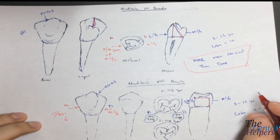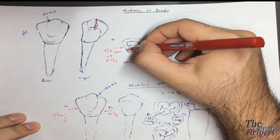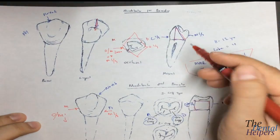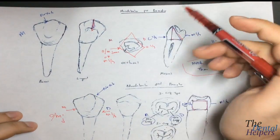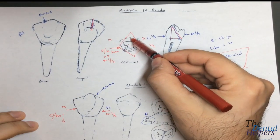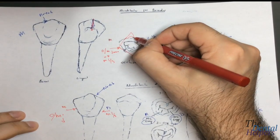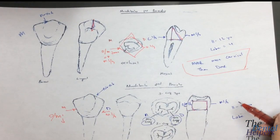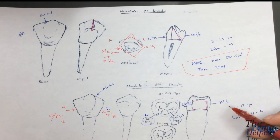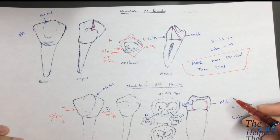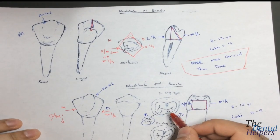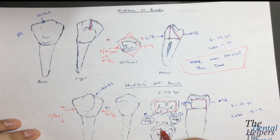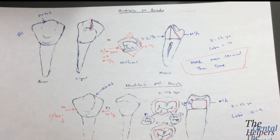In terms of the coronal outline, the coronal outline for the mandibular first is a diamond — it's a sharper pointed tooth because the height of contour creates more of a diamond pattern. For the mandibular second, the three-cusp form looks like a square for the occlusal table, while the two-cusp form is more of a circle, rounded, or oval shape.